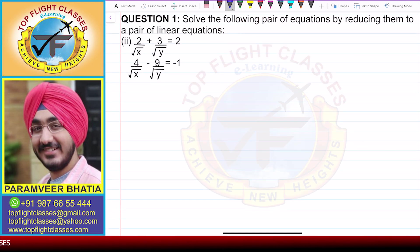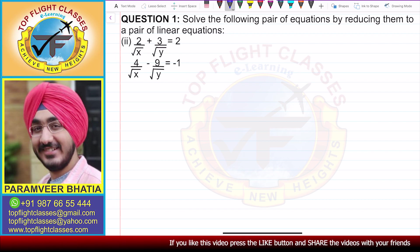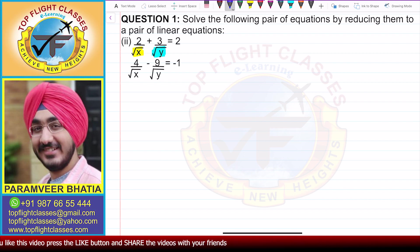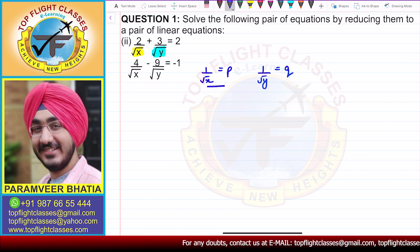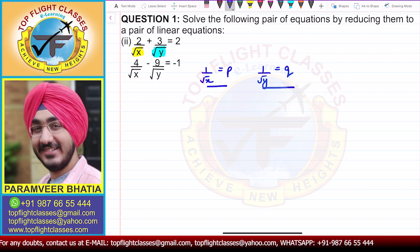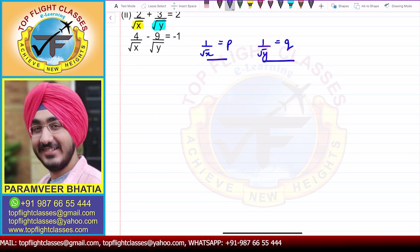The first method is the one we used in the first part — you can find the link in the description. In this case we will put 1 by root x equal to p and 1 by root y equal to q. Since the question says to reduce them to a pair of linear equations, we will follow this substitution method. We'll also solve with the direct elimination method as a second method.